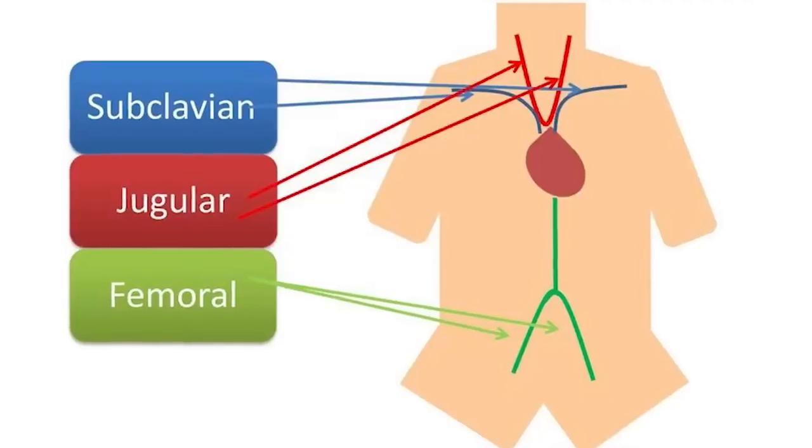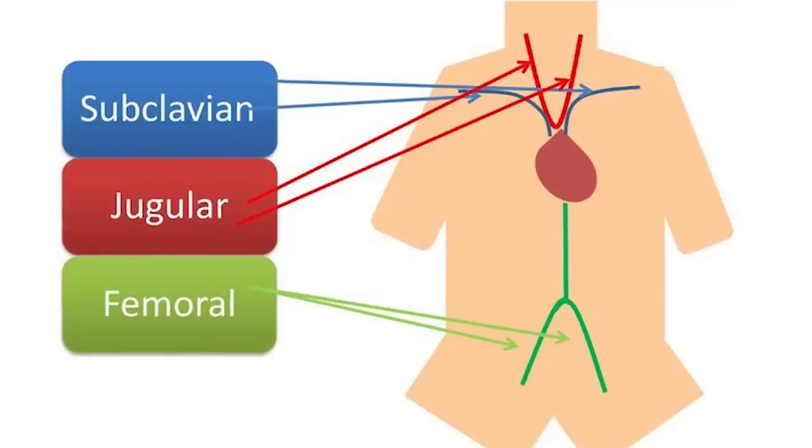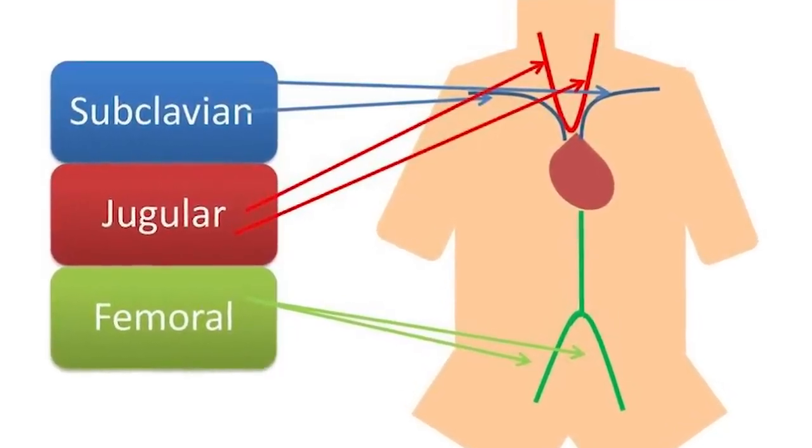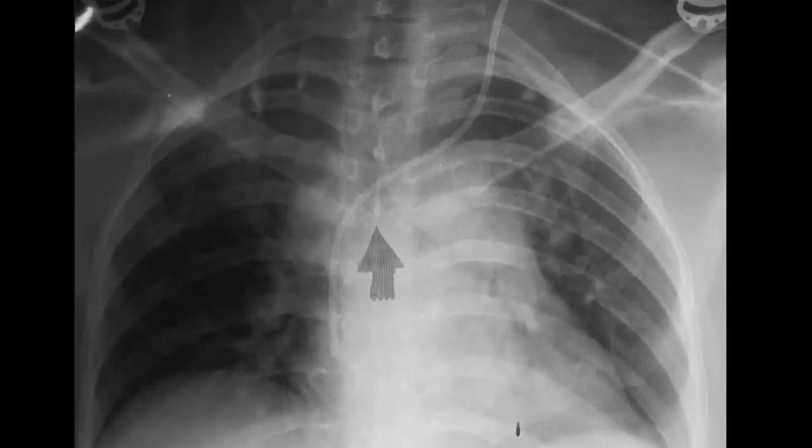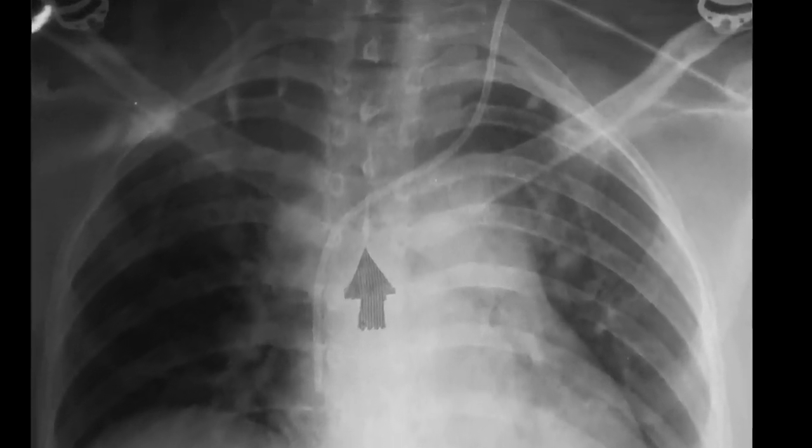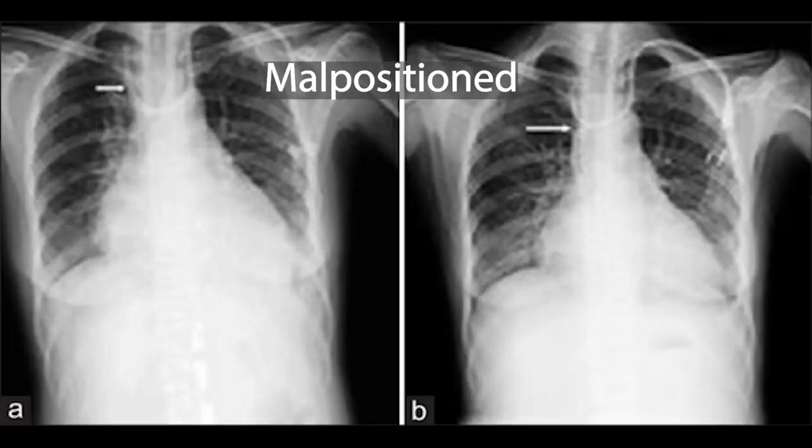As promised, I want to briefly discuss the other potential central line access sites. They all use the same Seldinger technique so you don't have to learn too much more. We just demonstrated the right internal jugular. You could also access the left IJ with the same landmarks, but there is a greater chance of malposition because the catheter will need to make a sharper turn down the superior vena cava.